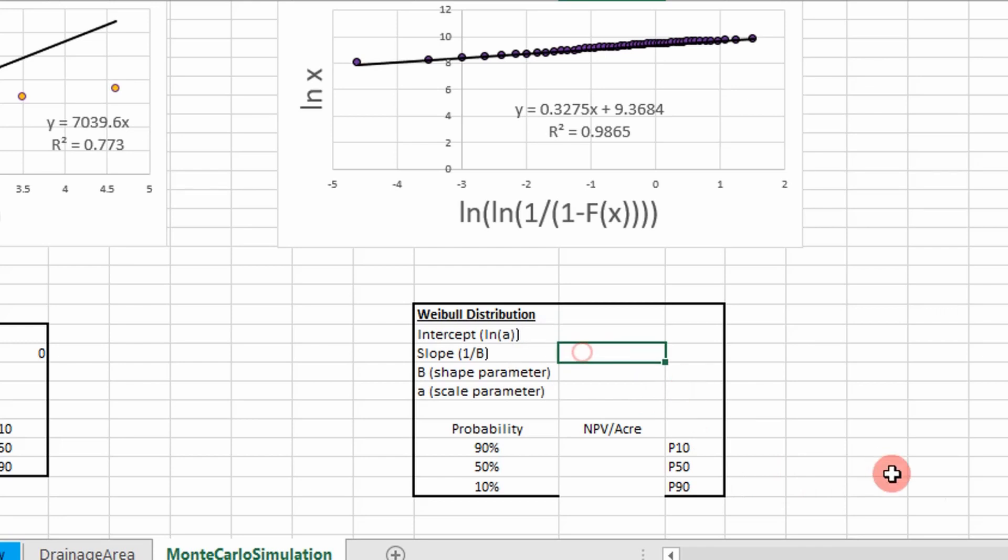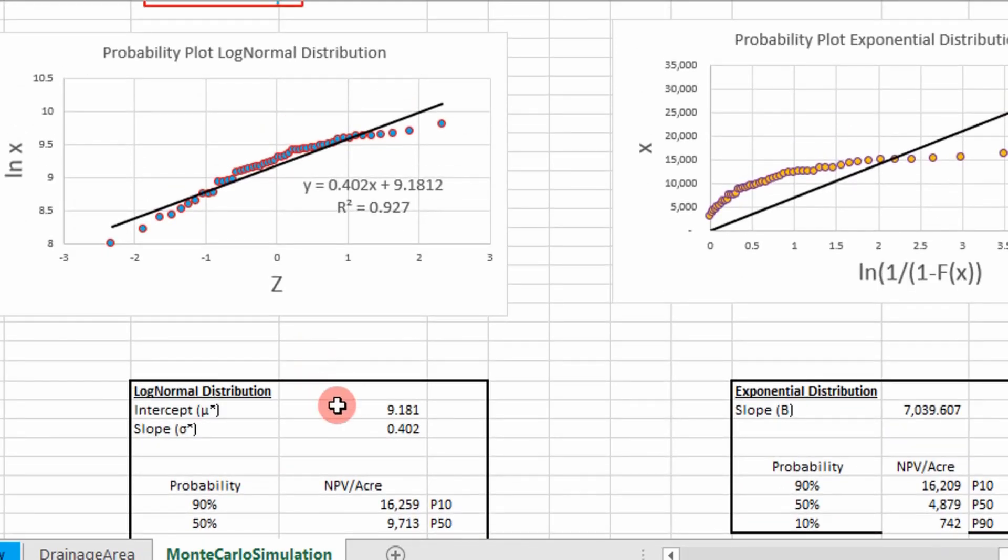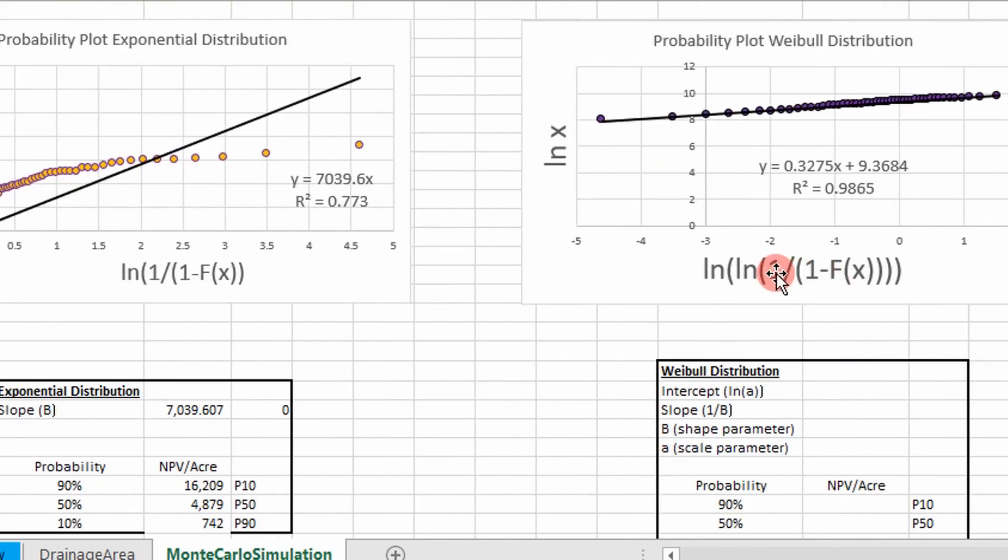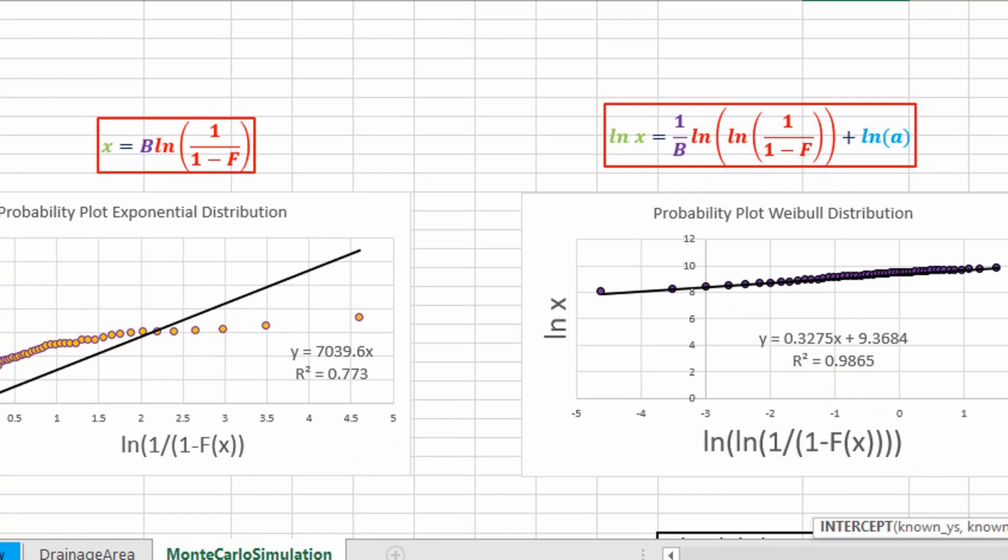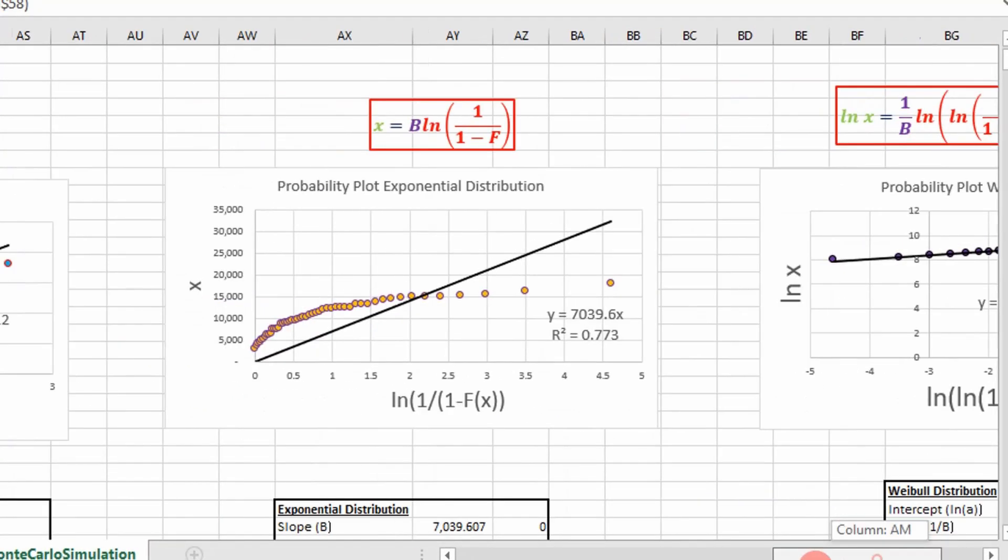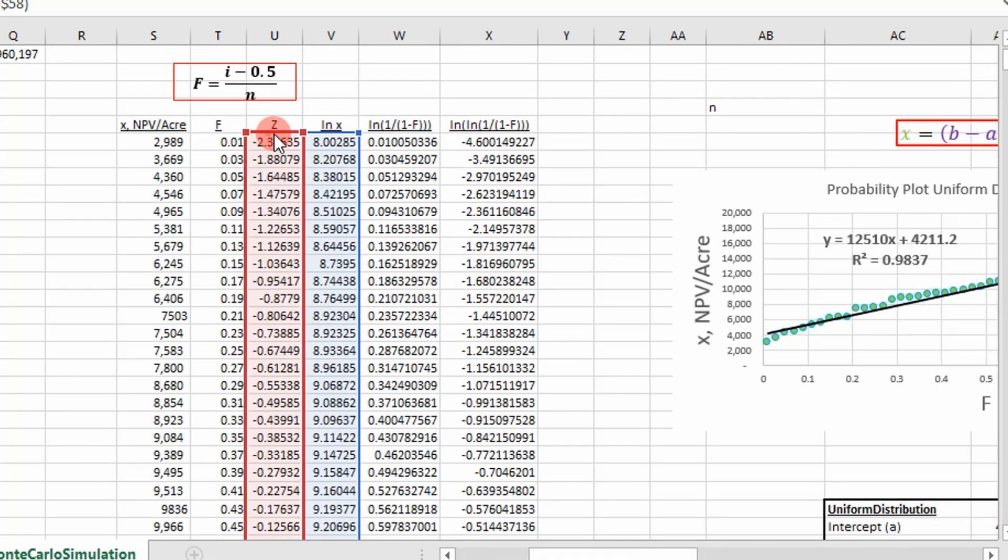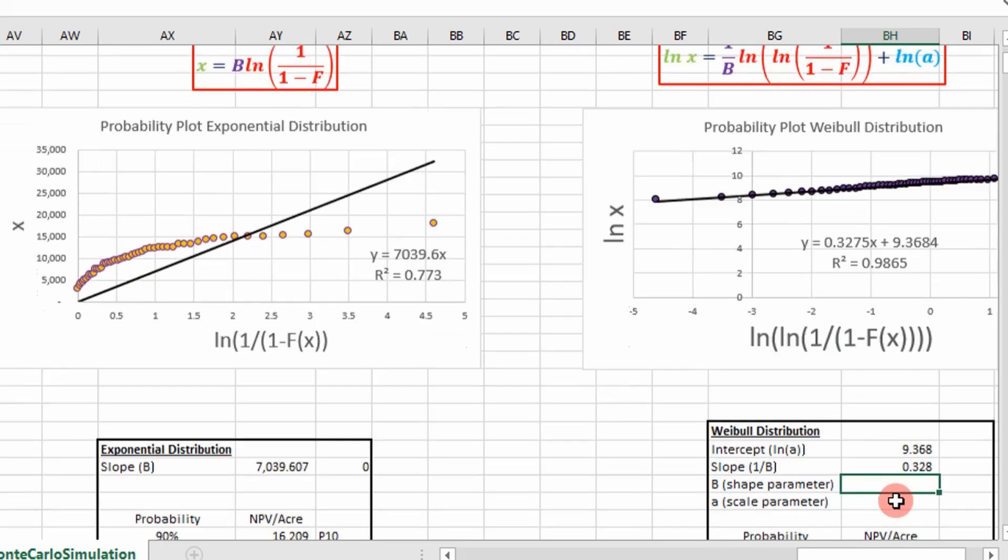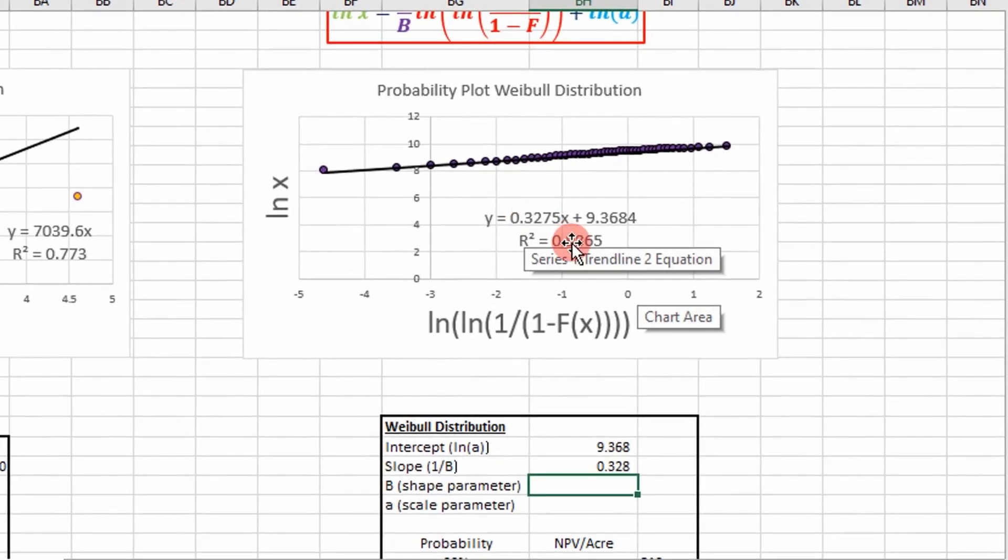We're going to calculate the intercept and the slope first. We're going to borrow from the log normal distribution because we have the natural log of a random variable on the y axis. All we'll have to do is change it from z to this column. The same for our slope. If you compare the numbers, we get the same values.